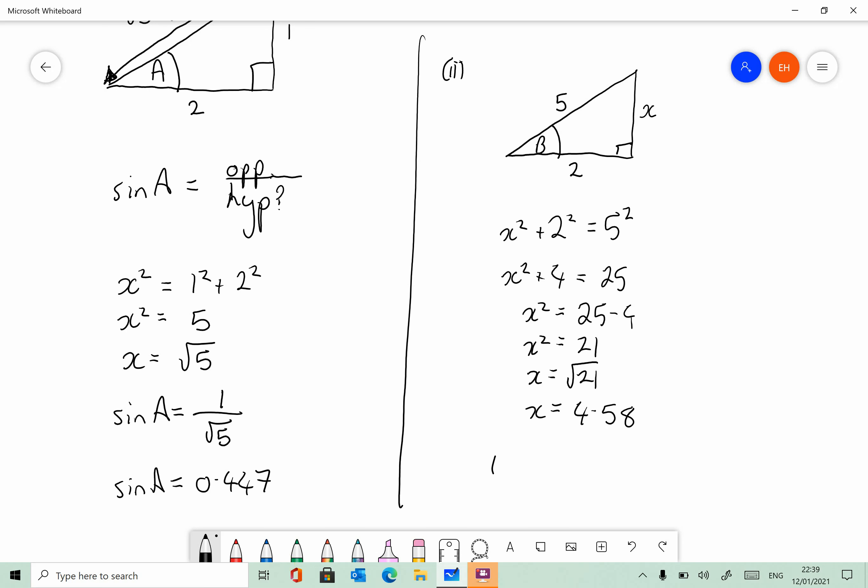So B for me, sorry, tan B. Tan B is equal to the opposite, which is 4.58, all over the adjacent, which is 2, which is 4.58 divided by 2, which is equal to 2.29. And I probably didn't need a calculator to do that, but anyway.